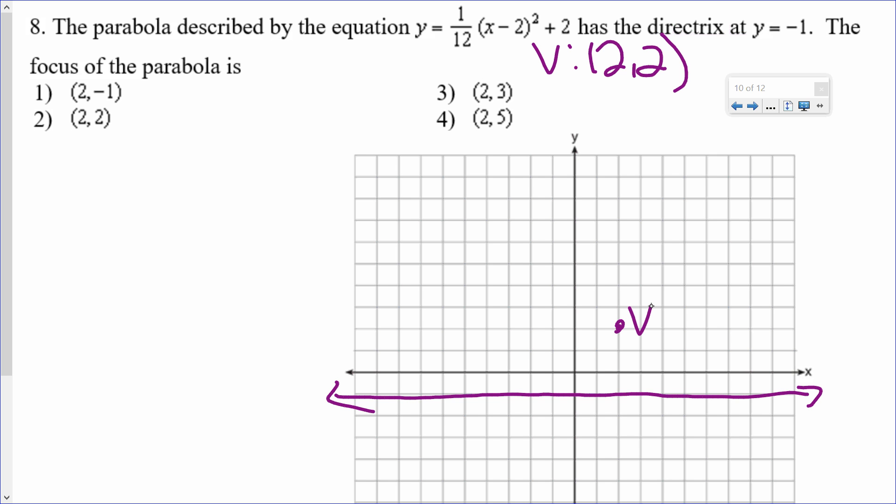It's asking for the focus. Well, the vertex needs to be between the other two. So, the focus has to be up top. If it's 1, 2, 3 to get to the vertex, it's 1, 2, 3 more to get to the focus. That point is 2, 5.